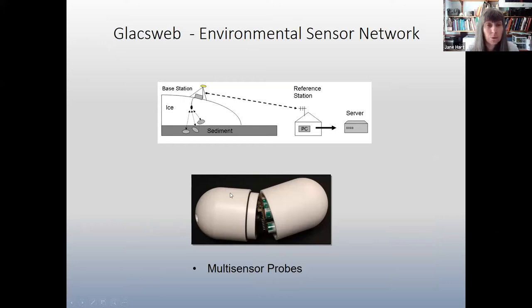So we installed these probes, they're about 16 centimeters long, either in the sediment beneath the glacier, the till, or in the ice itself. They send the data back to the surface, and the data is then relayed to a reference station which has mains electricity, and then goes on to a server and onto the web. So this was the Glaxweb system.